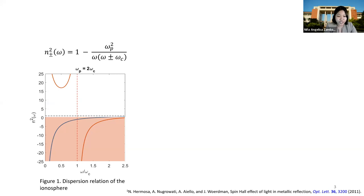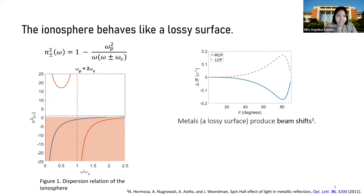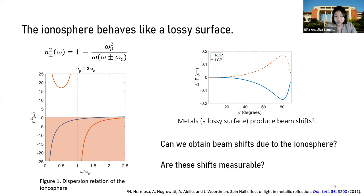From the previous work of my advisor and his colleagues, published in Optics Letters, they have proved that metals, which are a lossy surface, produce beam shifts. Hence, we then ask the following questions: Can we obtain beam shifts due to the ionosphere, and are these shifts measurable?